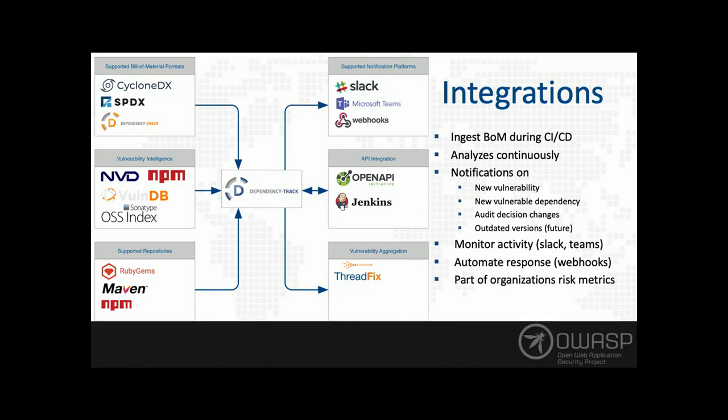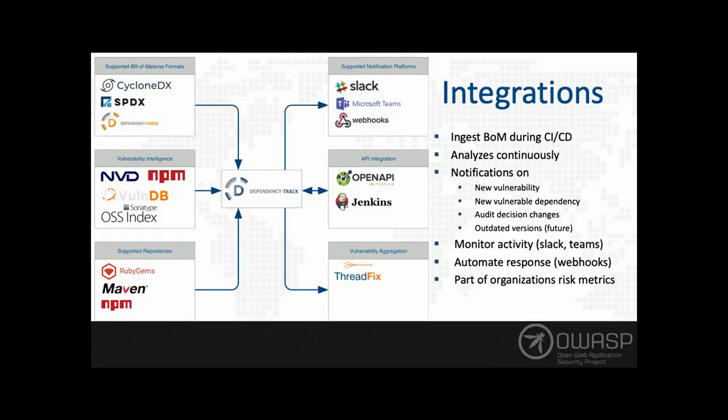The really interesting thing is the ability to automate your response using webhooks. The data we provide in webhooks allows you to do some really interesting things. For example, if you have a library and discover it's vulnerable, you can automate the response. If it's a minor version update, you might automatically create a pull request to update to the latest version. If it's a major framework update, you might automatically create a JIRA ticket to go into the team's backlog. It's really up to you how you use that functionality.